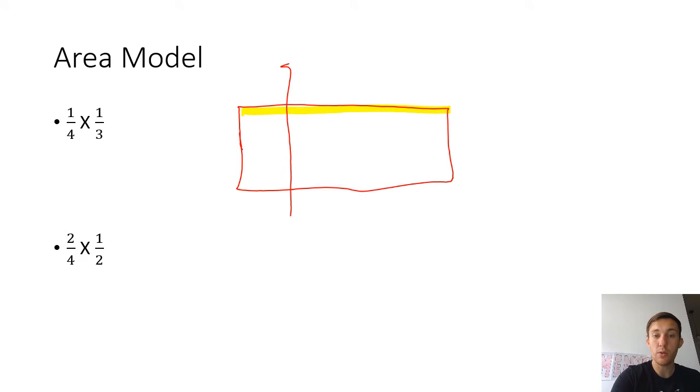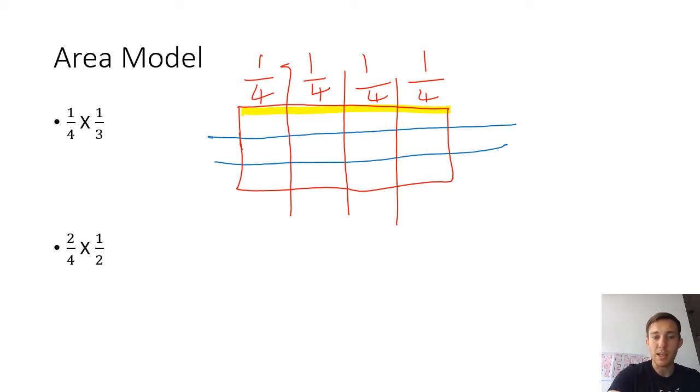So we've got one quarter, two quarters, three quarters and four quarters. And then when we multiply it by thirds, we need to then go the other way and split it at the other edge. So I'm going to split it into thirds going this way now. So I can see I've got one third going across, then two thirds, then three thirds.